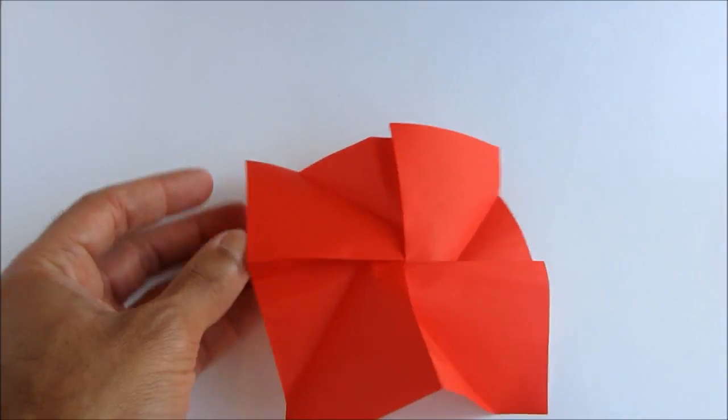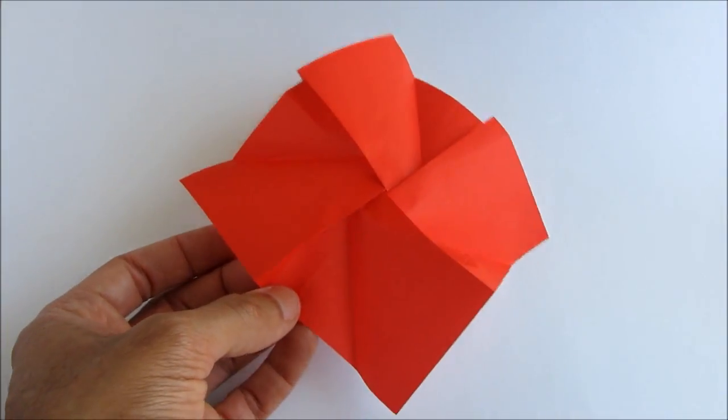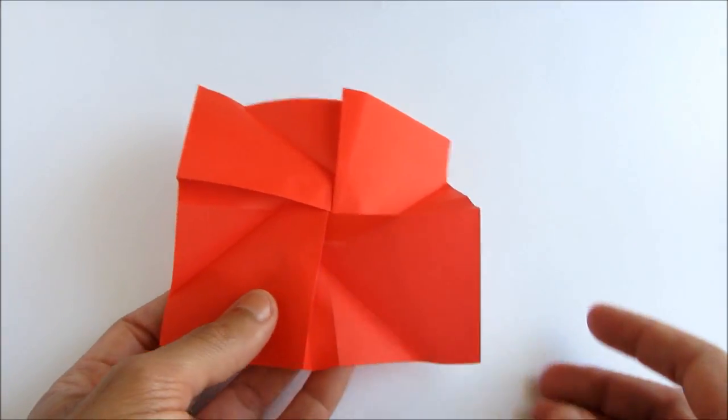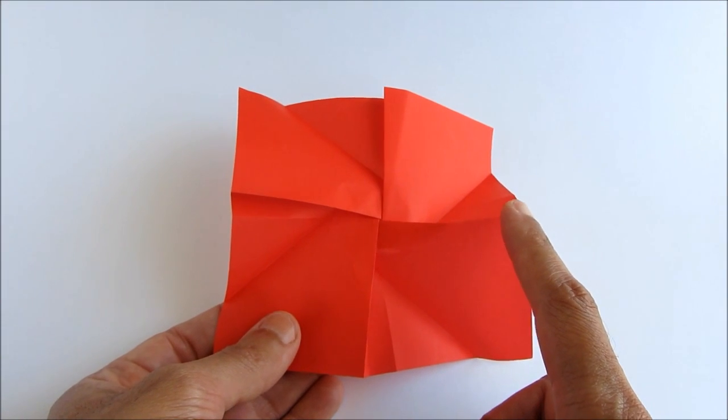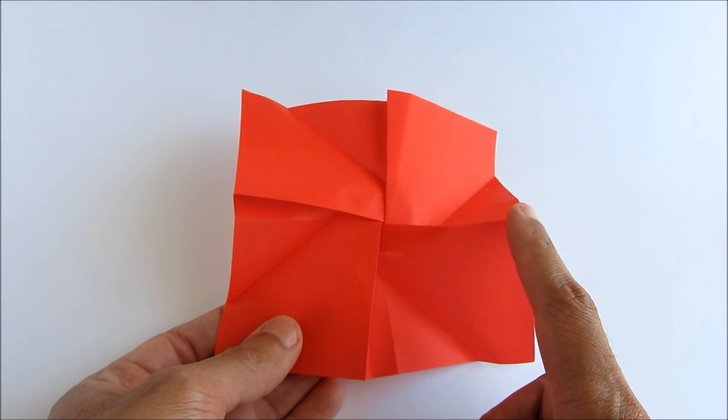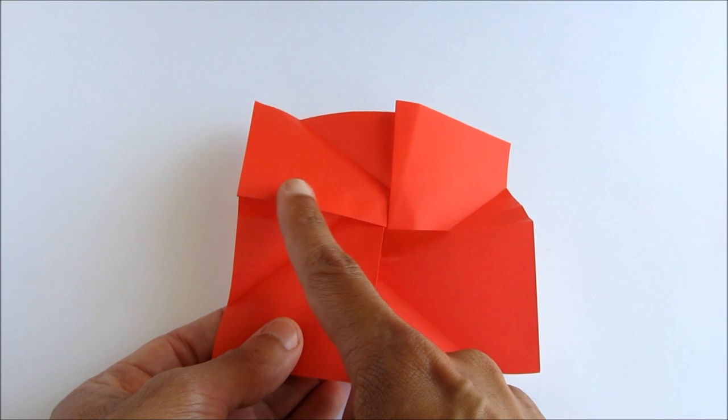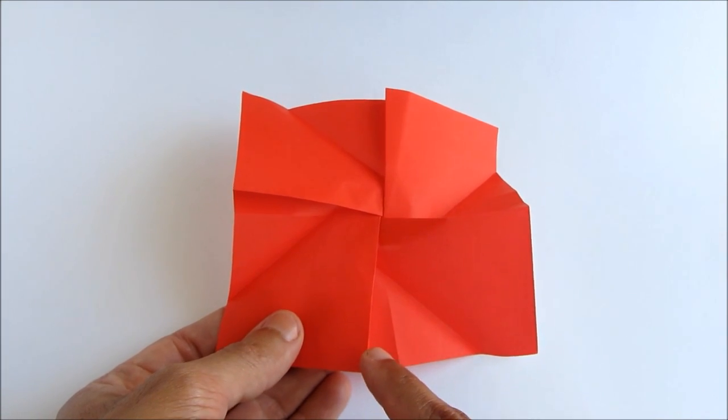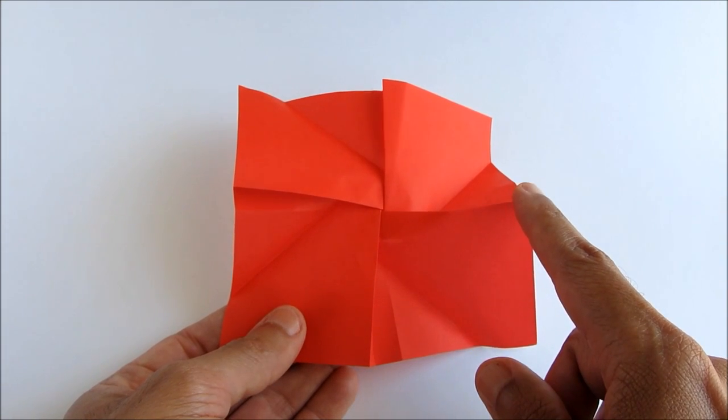Now flip the paper over. It's not that flat anymore, so we're starting to get to where we want to be. Each of these four edges that we're pointing out here will form the top edge of the rose.